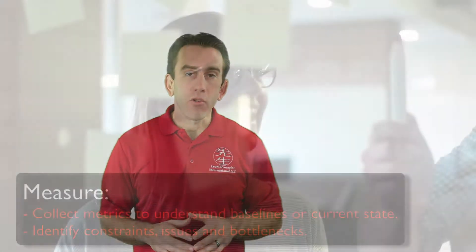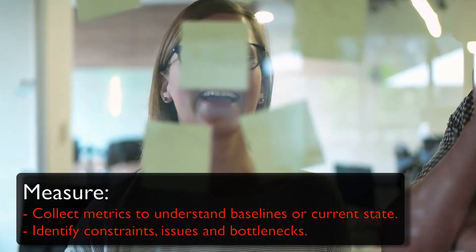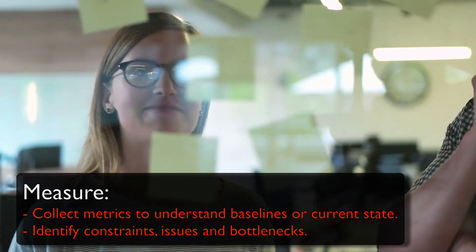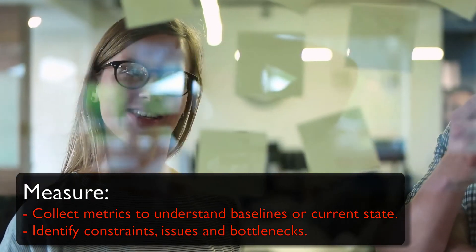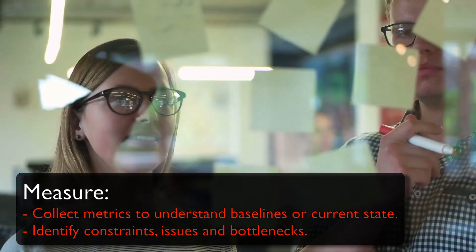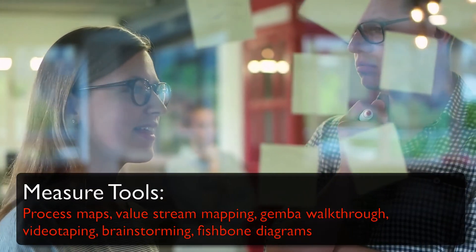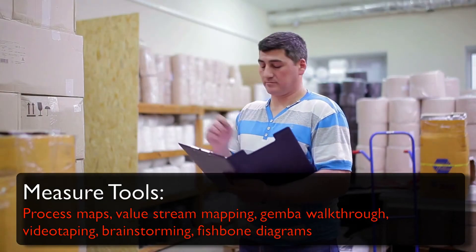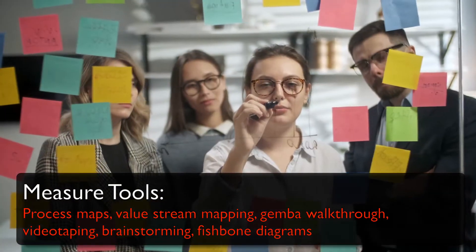After everything has been defined, we move on to the Measure stage. Here, you begin to collect the appropriate metrics so that you can understand the current state or baseline and any associated constraints with the process you are working on. This is typically done using process maps, value stream mapping, gemba walkthroughs, videotaping, brainstorming, fishbone diagrams, or any other tool that will allow you to reveal the current state.